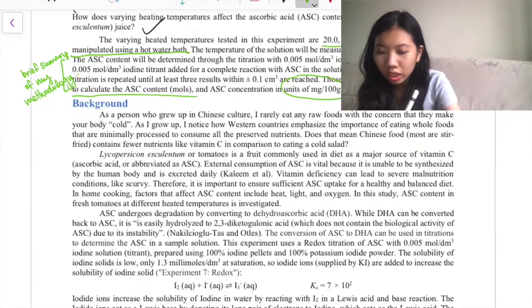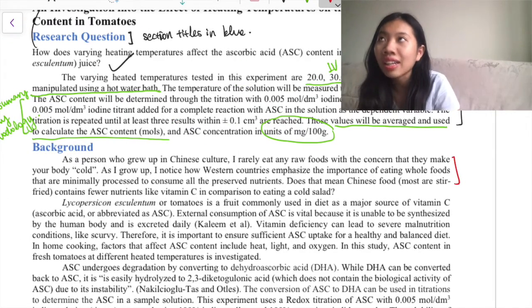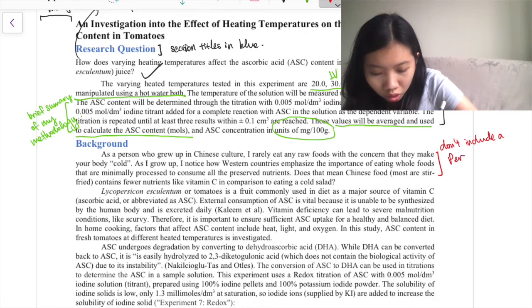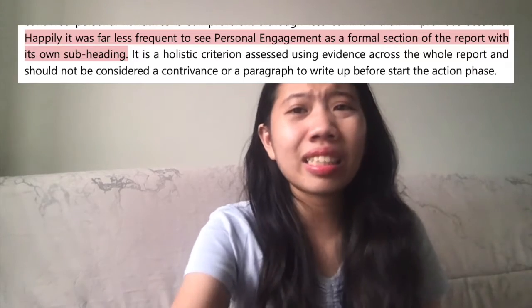The IB subject report states that research questions using those vague terms are generally weaker. Moving on - as you can see here I wrote something about Chinese culture for the personal engagement section. I've seen a lot of teachers say don't include a lengthy personal engagement section. It is a criteria worth about two marks, which is less than 10% of your overall IA, so it takes up too much space. Even this one paragraph I think is too much.